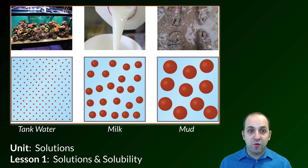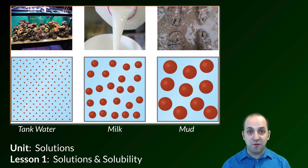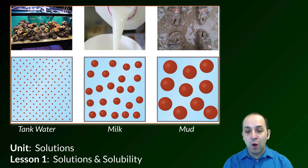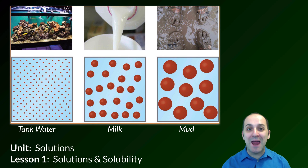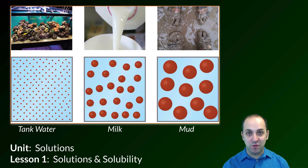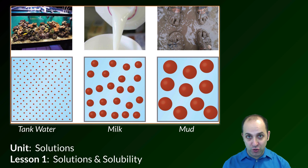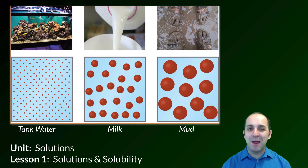To start, I thought I might ask you a question. I've got three different types of substances here: tank water, milk, and mud. This is showing you macroscopic and microscopic pictures of each of them. Only one of them is a solution — can you figure out which one it is? I bet you can.